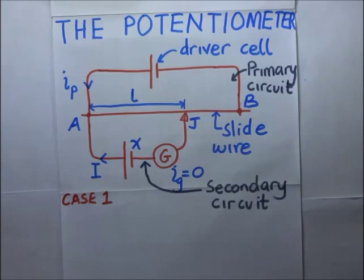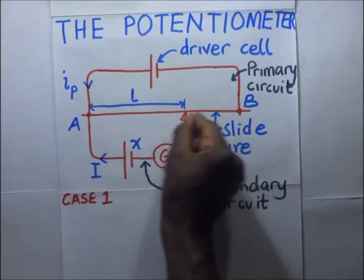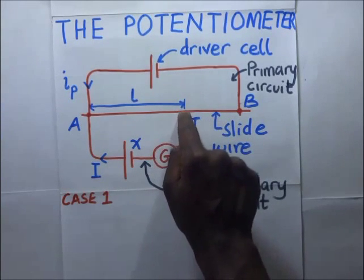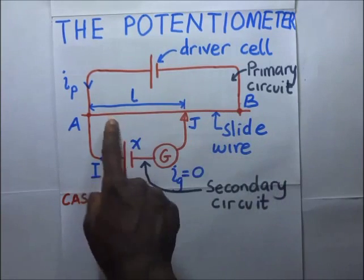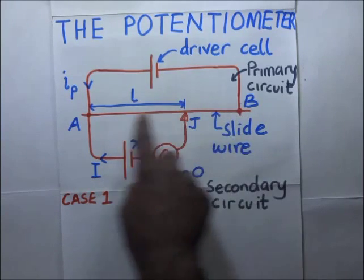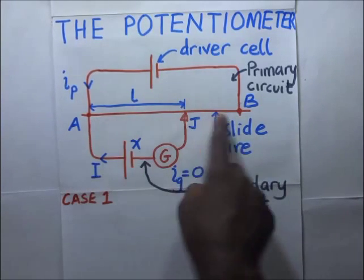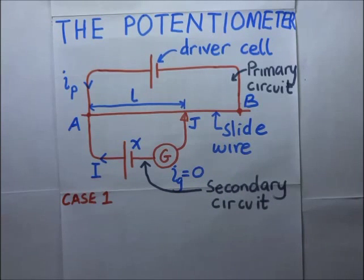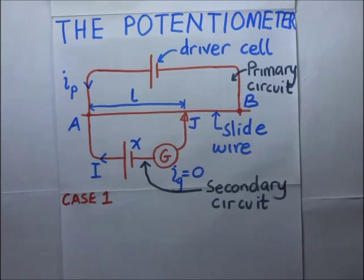The current in the primary circuit must remain constant, and the sliding jockey must not be slid while in contact with the wire. If you slide the jockey while it is in contact with the wire, you are likely to scrape off part of the wire. This makes the cross-sectional area of the wire non-uniform, meaning the PD per unit length of that wire will be variable. The diameter of the wire must be uniform throughout for accurate results.